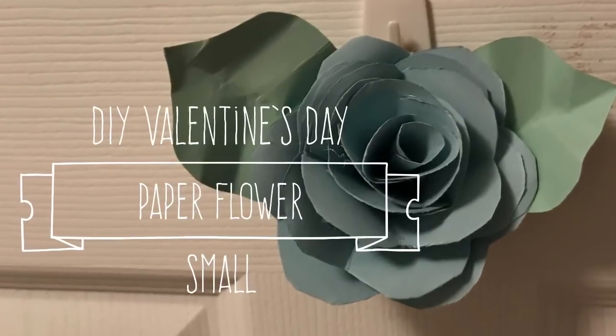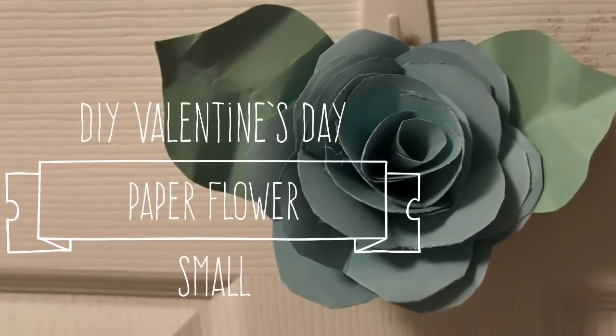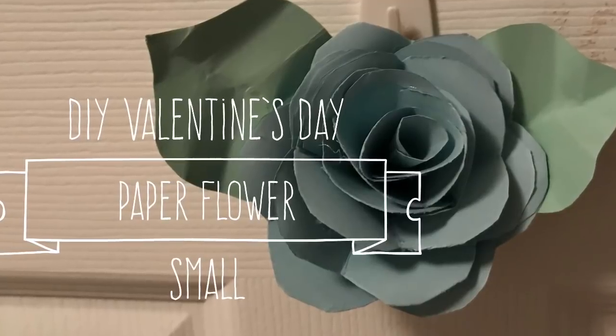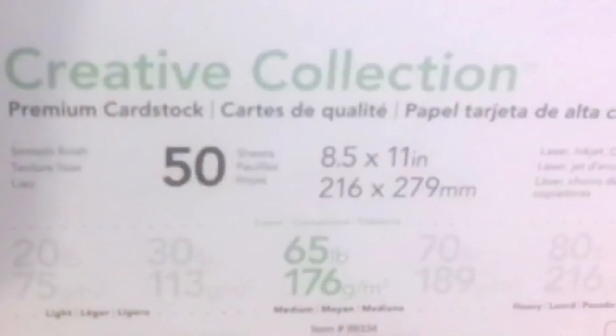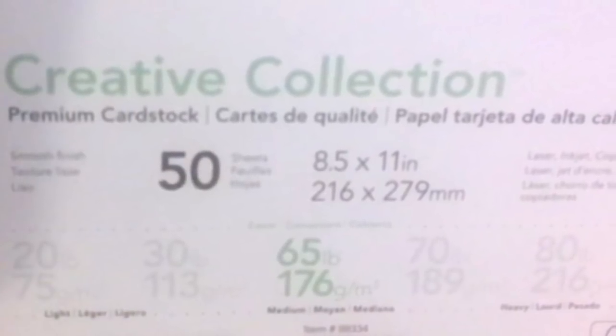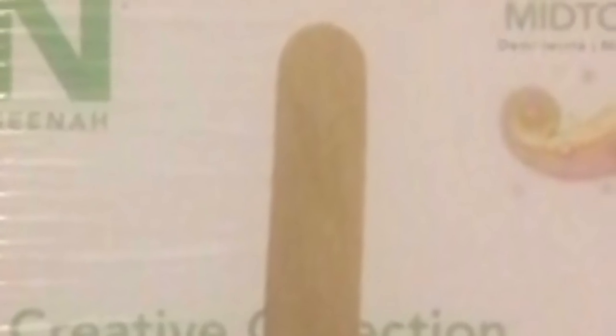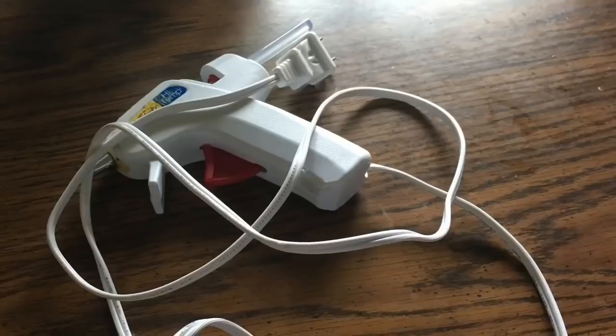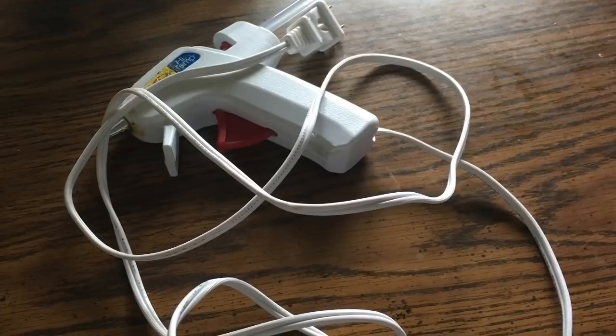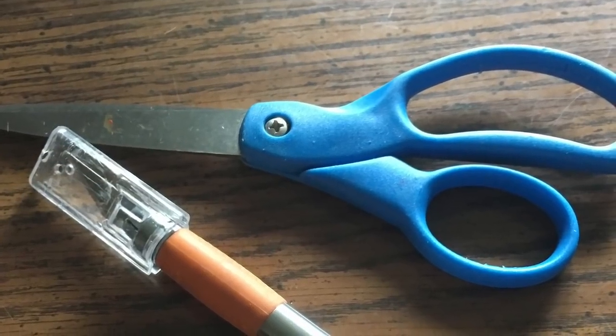Hi everybody, welcome back to my channel. Today I'm going to teach you how to make a DIY Valentine's Day paper flower. This is a small one. We're going to use 65 pound cardstock, but you can use coverstock. You're going to need a burnisher, some glue, and a pair of scissors.